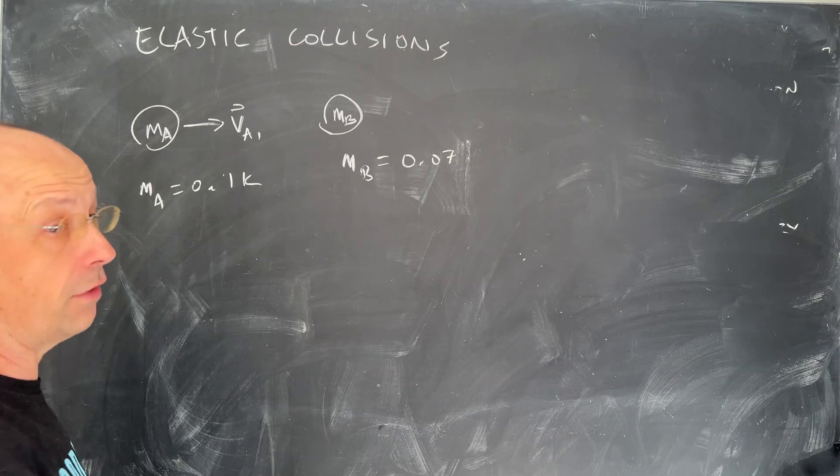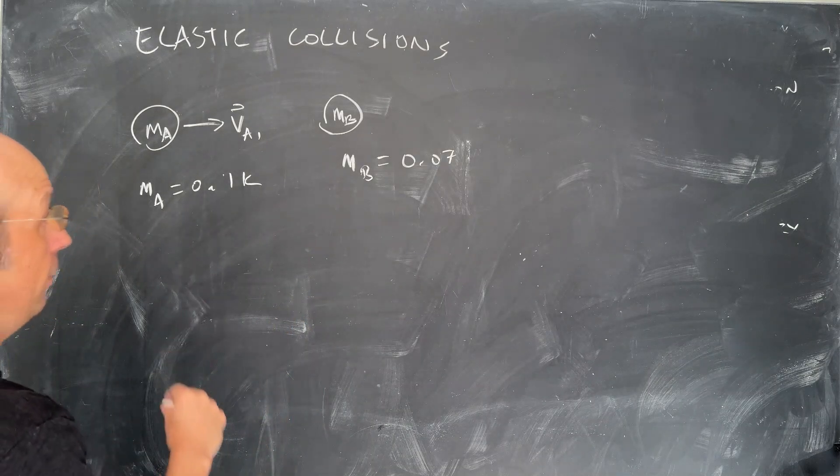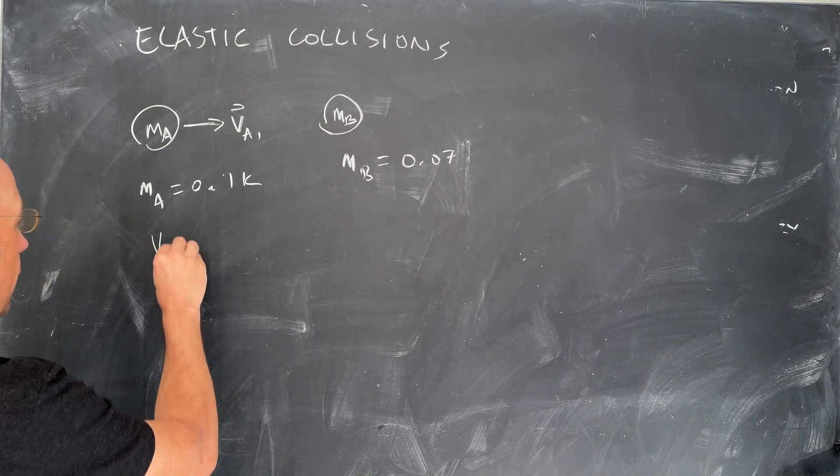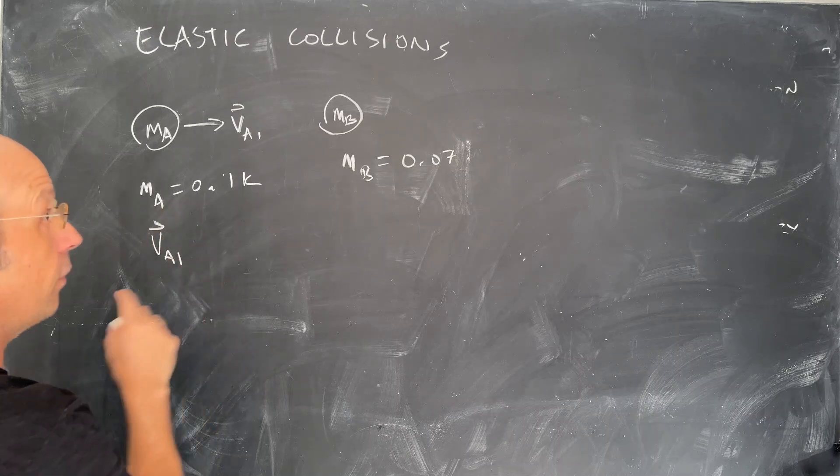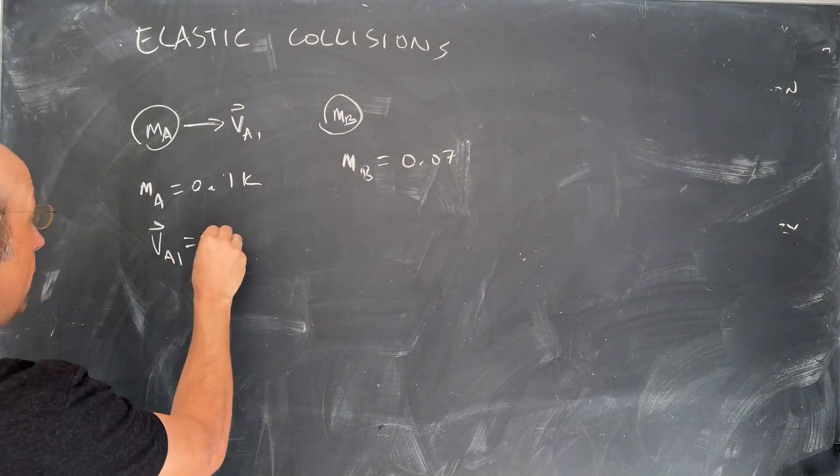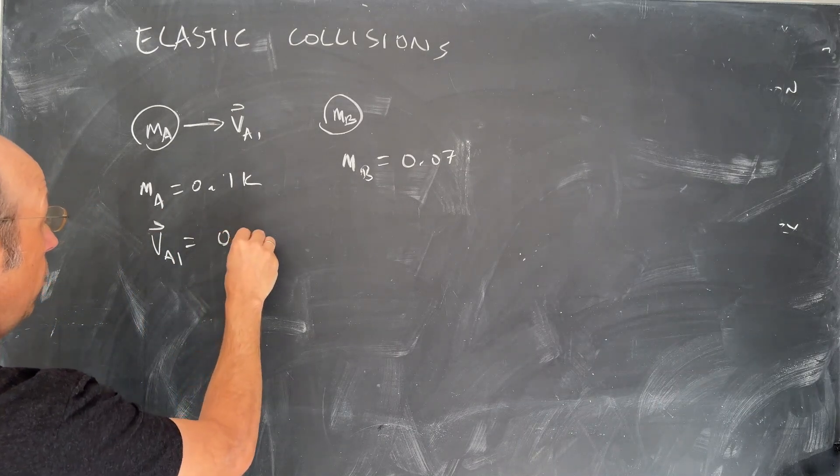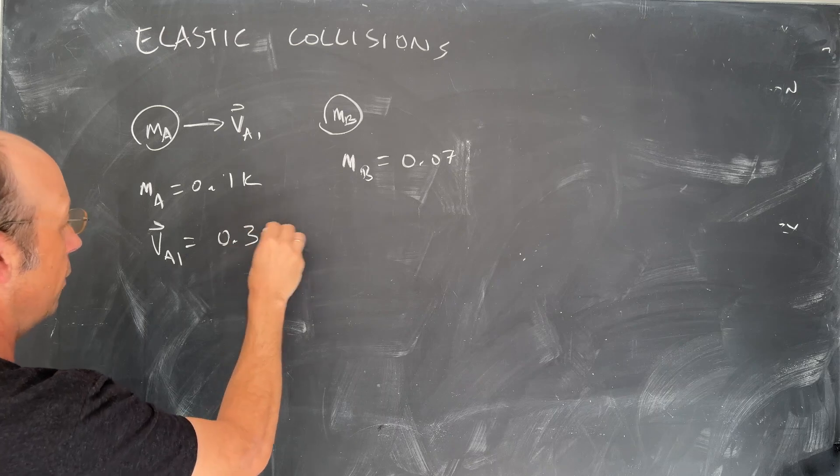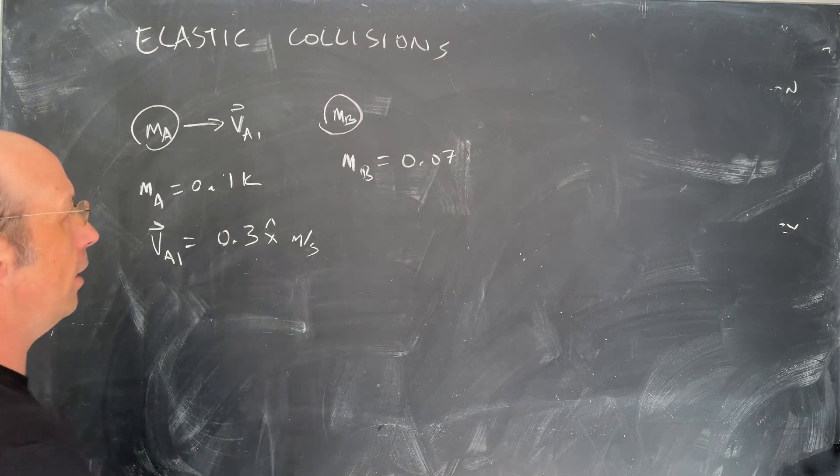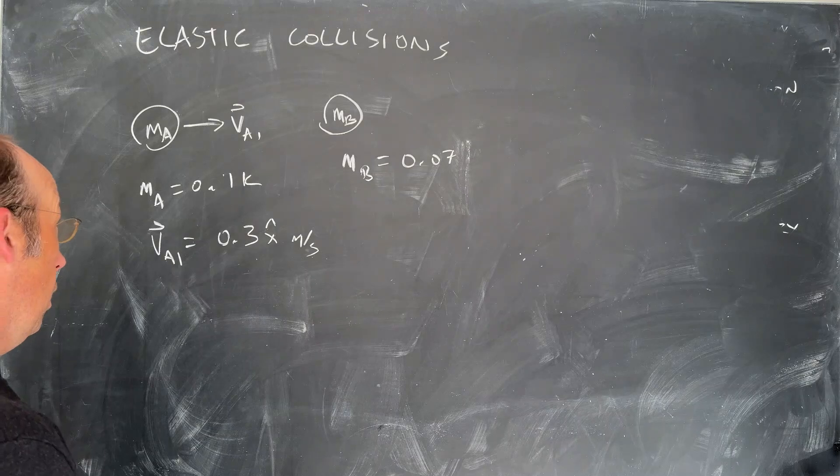And then it has an initial velocity vector. I'm just going to pick that at 0.3 meters per second. So VA1, that's the velocity of A beforehand, is the vector 0.3 meters per second. And that one's at rest.